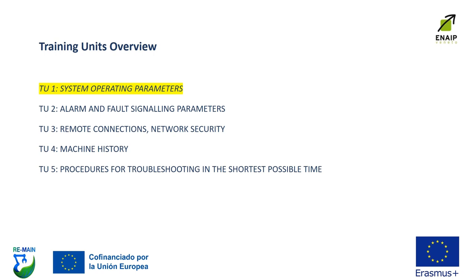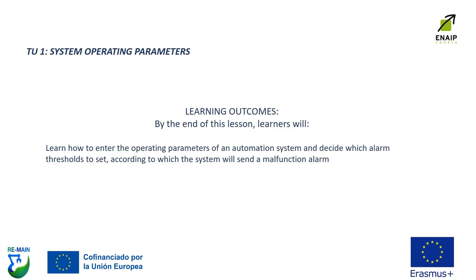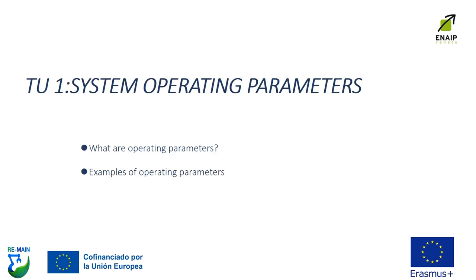Let's have a look at the training units overview. Training unit number one: System Operating Parameters. Learning outcomes. By the end of the lesson, you will learn how to enter the operating parameters of an automation system and decide which alarm threshold to set, according to which the system will send a malfunction alert.